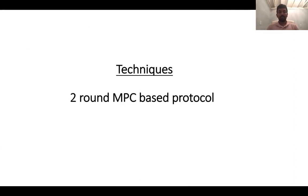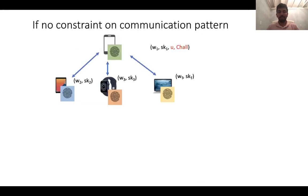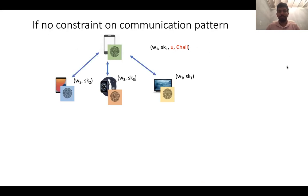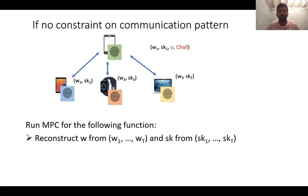In this work, I'll focus briefly on the techniques underlying our first feasibility result and the efficient protocol for cosine similarity. So what are the techniques in our protocol? Let's see the two-round MPC-based one. Suppose there was no constraint on the communication pattern at all. In the online phase, each of these devices had their own shares of the template and the signing key. The device initiating the protocol has a new measurement u and a challenge value sent from the server.